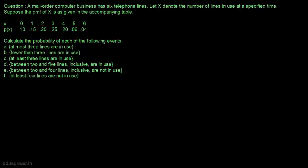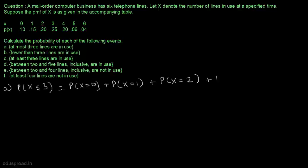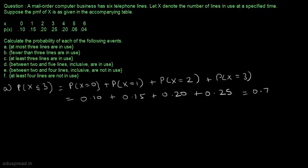We have to calculate the probability that at most three lines are in use. In part A, we have to calculate the probability that x is less than or equal to 3. This is equal to P(x=0) + P(x=1) + P(x=2) + P(x=3), which equals 0.10 + 0.15 + 0.20 + 0.25 = 0.70. This is the probability that at most three lines are in use.